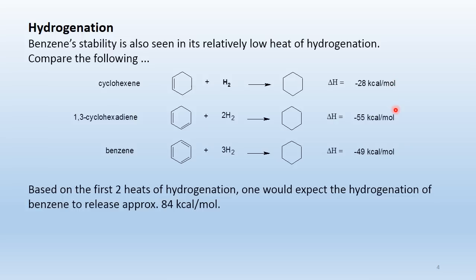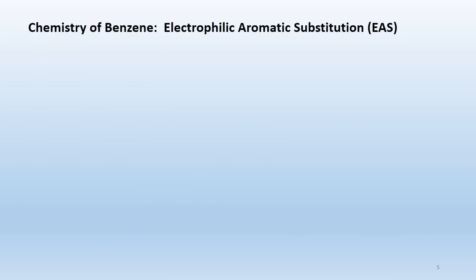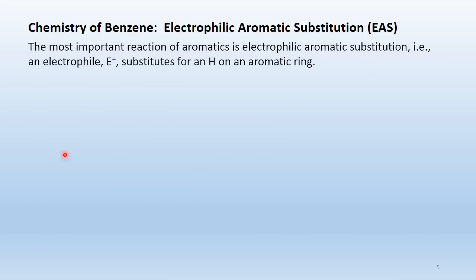Based on these heats of hydrogenation, one would expect benzene with three pi bonds to release 3 × 28 = 84 kcal/mol, but it only releases 49 kcal/mol. So benzene is 84 − 49 = 35 kcal/mol more stable than a cyclic triene should be. The hypothetical 1,3,5-cyclohexatriene does not exist; instead, we have the stable aromatic compound we call benzene.